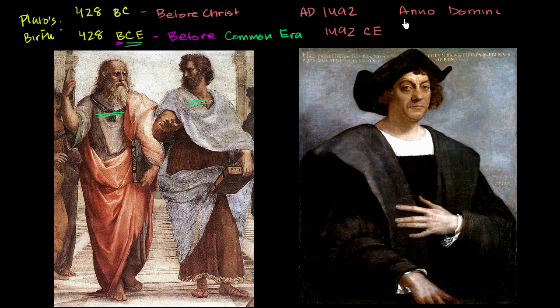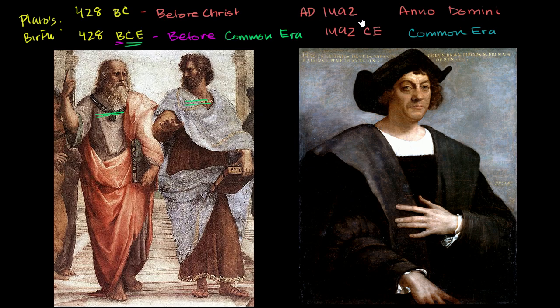So years since Jesus was born, with year one being implicitly his birth. CE stands for common era. 1 CE is the same thing as AD 1. Sometimes instead of writing AD 1492, we'll write 1492 AD. All referring to the exact same thing.